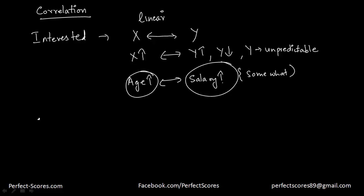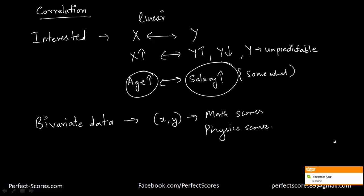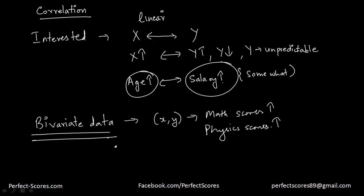You usually apply correlation to bivariate data. A bivariate data is data which always comes in pairs — for example, X comma Y. If you make an Excel sheet with students' math scores against their physics scores, you can see there is a correlation between them. If a student's math score increases, generally their physics score also increases. Correlation is applied to bivariate data because you need two variables — you can't apply it to a single variable.